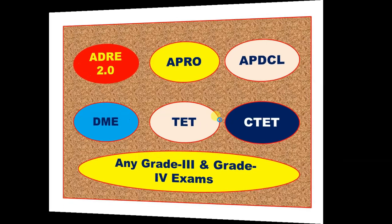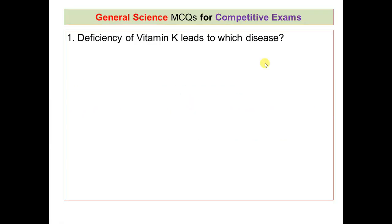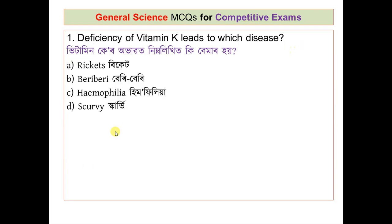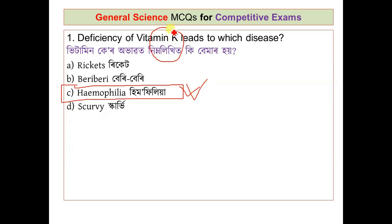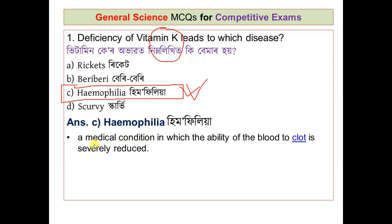The first question is: the deficiency of vitamin K leads to which disease? Vitamin K deficiency causes a condition similar to hemophilia — a medical condition in which the ability of blood to clot is severely reduced. Vitamin K is very important because it helps in clotting our blood.